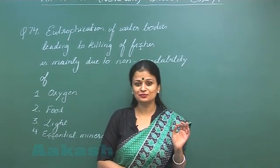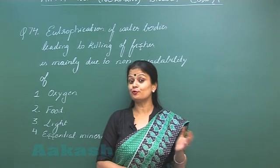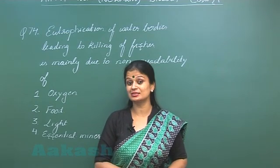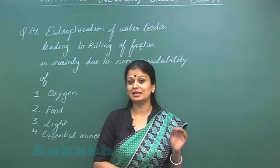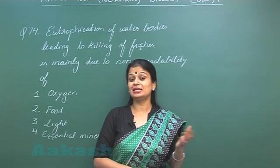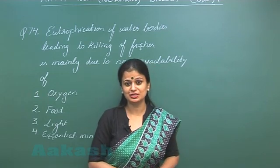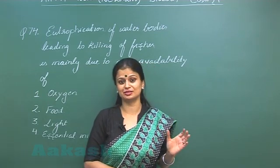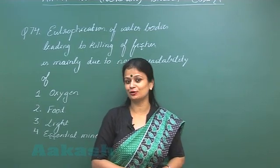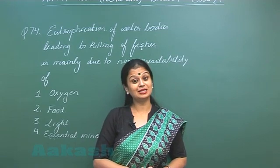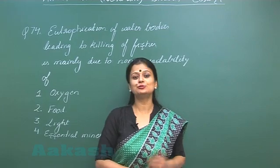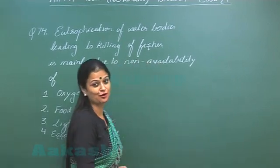Due to the death of the plants, the photosynthetic activity decreases, or you can say the availability of oxygen decreases. Due to the less availability of oxygen, suffocation to the animals occurs, which leads to the death of fishes. So the death of the fishes and animals occurs due to the non-availability of oxygen.